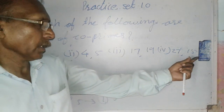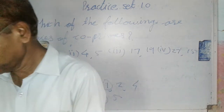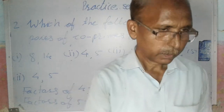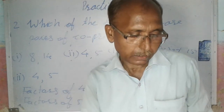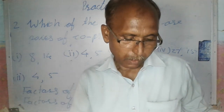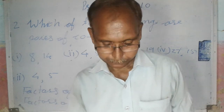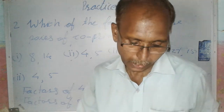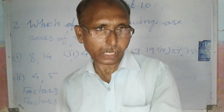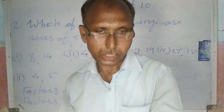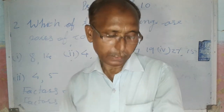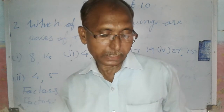Now you decide whether 27 and 15 is a pair of co-primes. The prime numbers from 25 to 100 are: 29, 31, 37, 41, 43, 47, 53, 59, 61, 67, 71, 73, 79, 83, 89, 97. So there are a total of 16 prime numbers in that range.